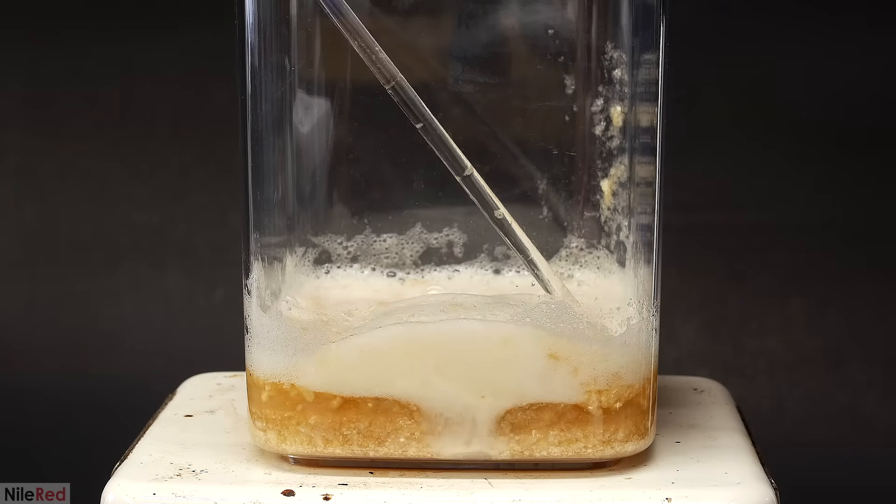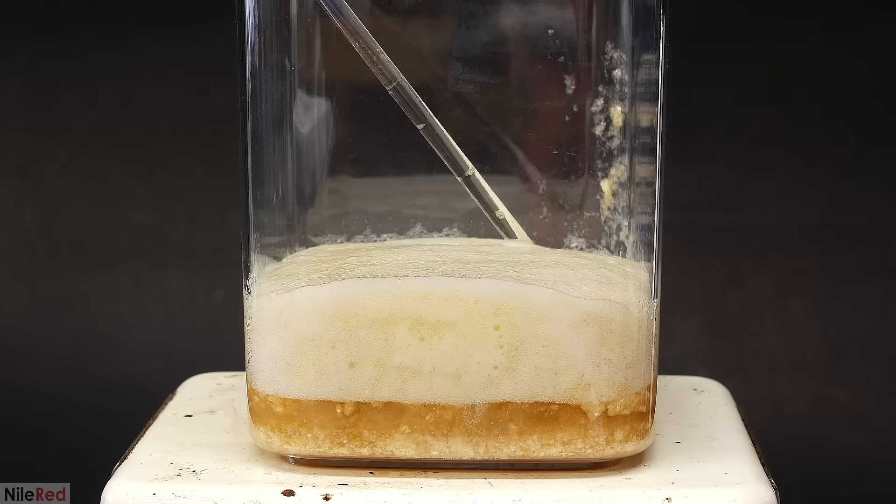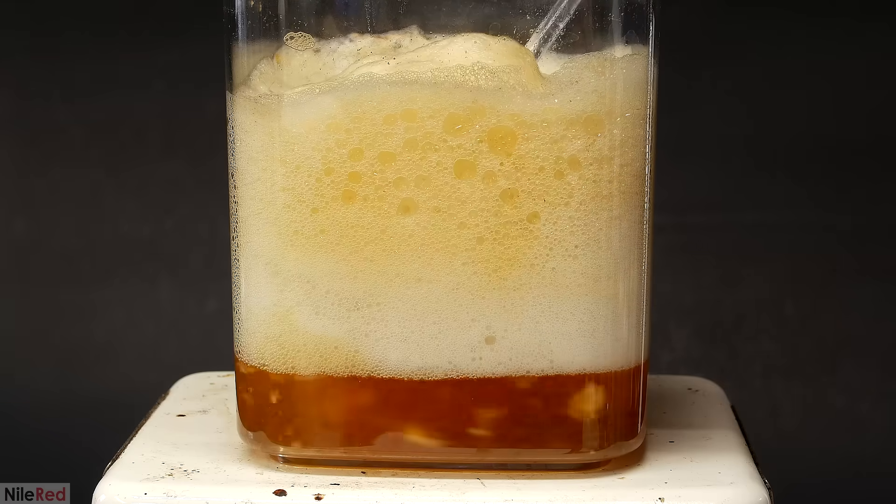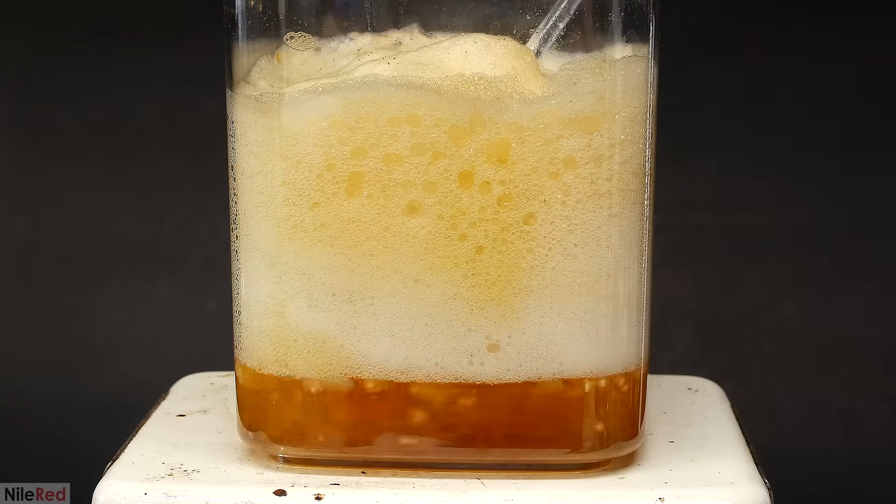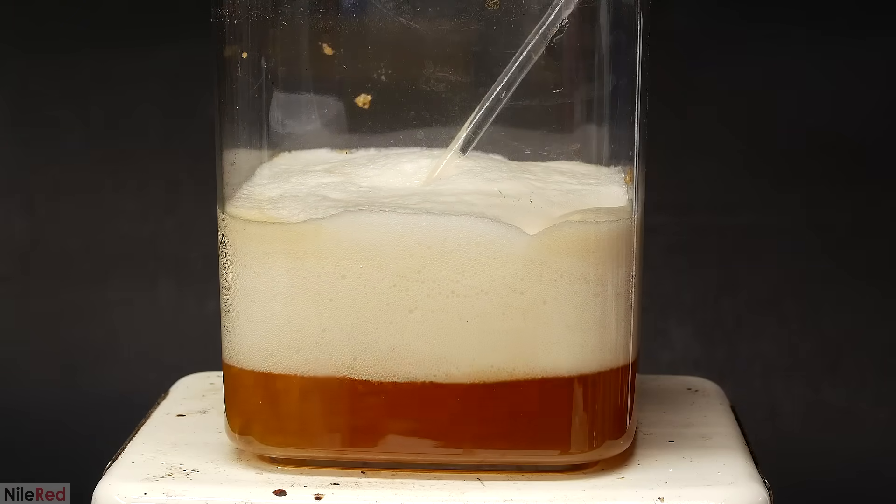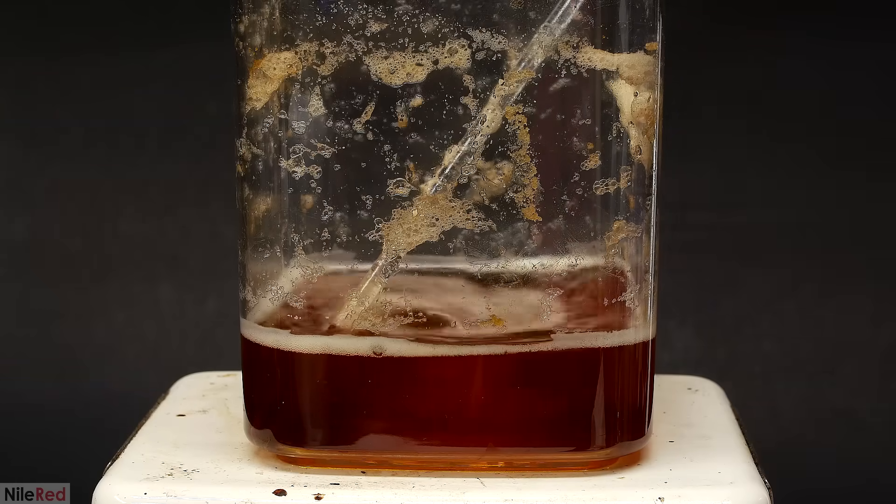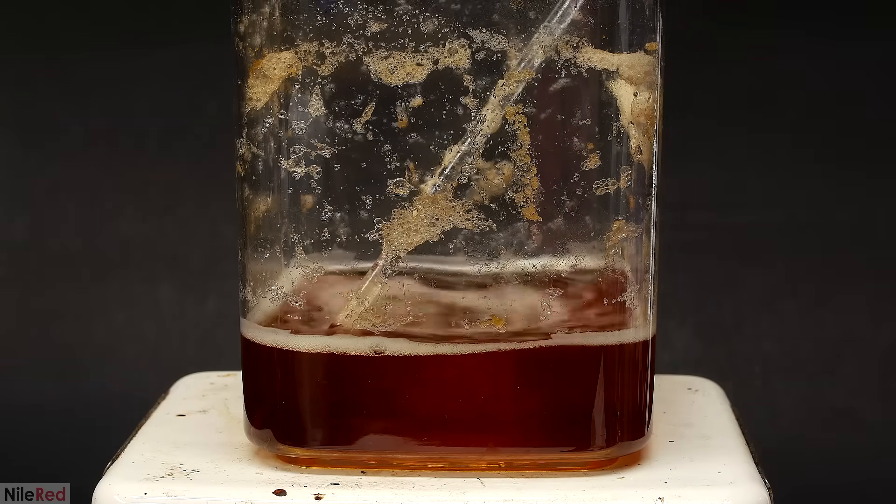and I realize that doing this in such a small container is a horrible idea. To prevent a disaster, I quickly transfer it to a larger one and continue the addition. The goal here is to just keep adding the potassium carbonate until all of the solid urea nitrate disappears.